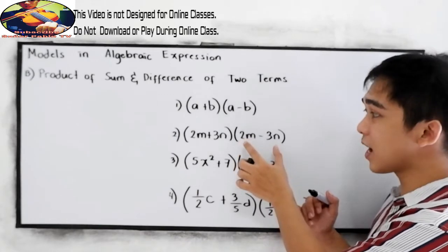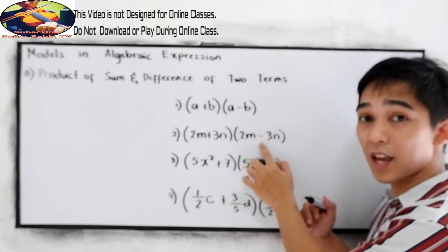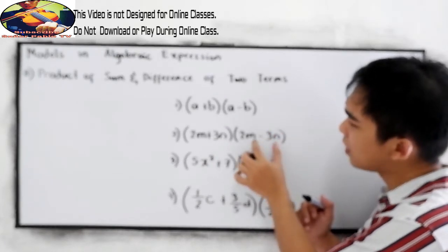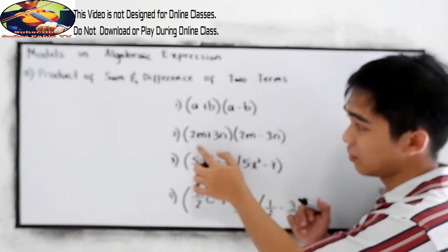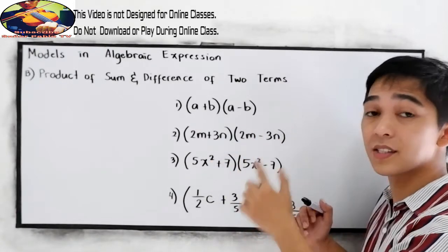So notice that we have the plus and minus sign. It can also be interchanged. 2M minus 3N times 2M plus 3N. They are still the same.